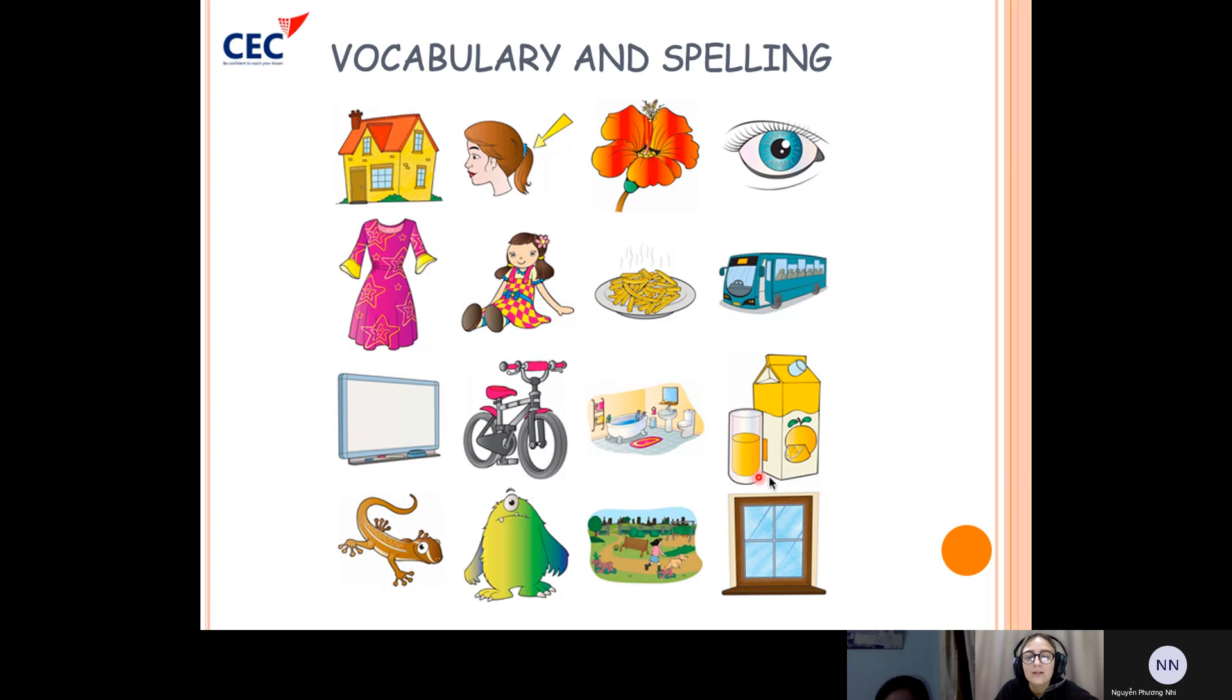It's oranges. Yeah. What is this? It's a monster. Good. What is this? It's windows. It's windows. What is this? It's a bathroom. Good. What are these? These are french fries. Good.